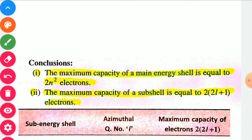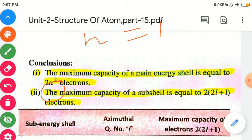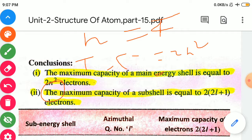Conclusion of Pauli's Exclusion Principle: The maximum capacity of a main energy shell equals 2n² electrons. For example, if n equal to 4 (4th shell), total number of electrons equals 2 into 4 squared equals 2 into 16 equals 32 electrons. So the maximum number of electrons in the 4th shell is 32.